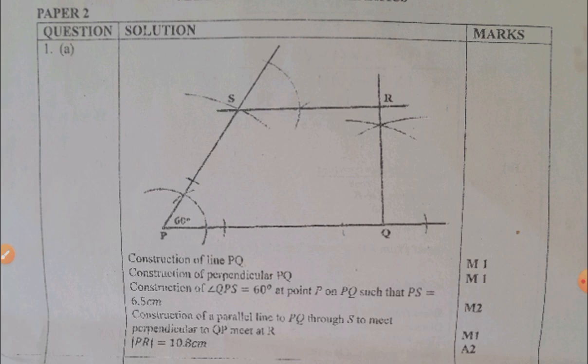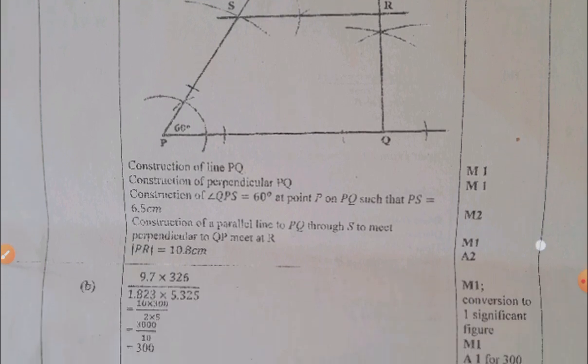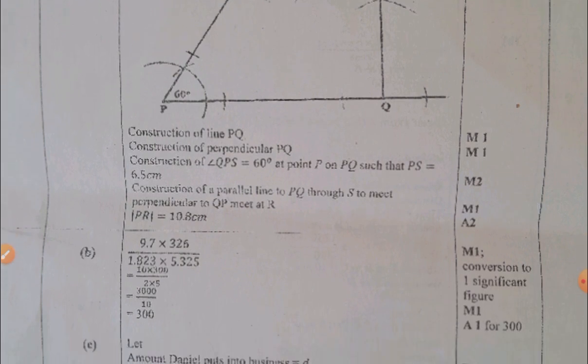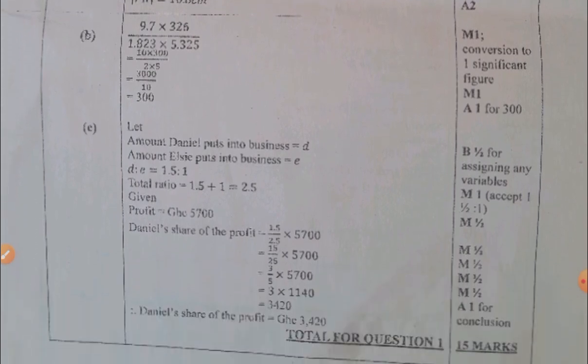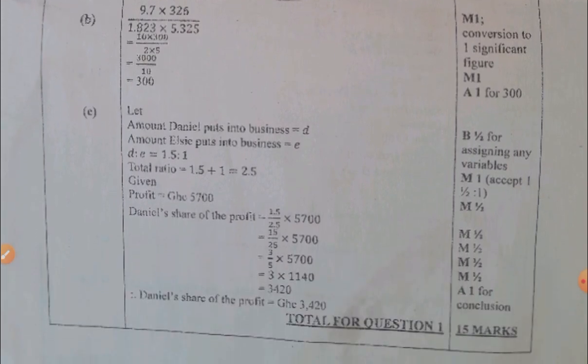This is how the construction is going to look like, just 60 degrees on the P and 90 degrees with the Q. Then the B final answer is 300, then the C, Daniel's share of the profit is 3420.